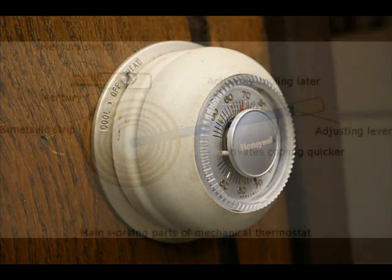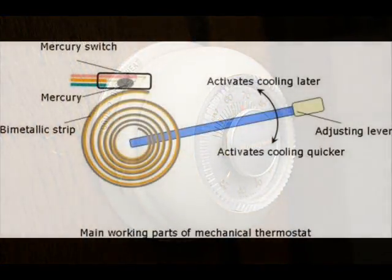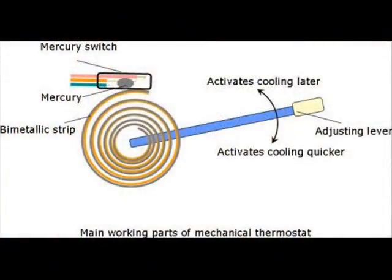Old thermostats use a bimetallic coil that expands and contracts with temperature. This is their temperature controlled switch. This mechanical latch has been replaced with an electronic latch.